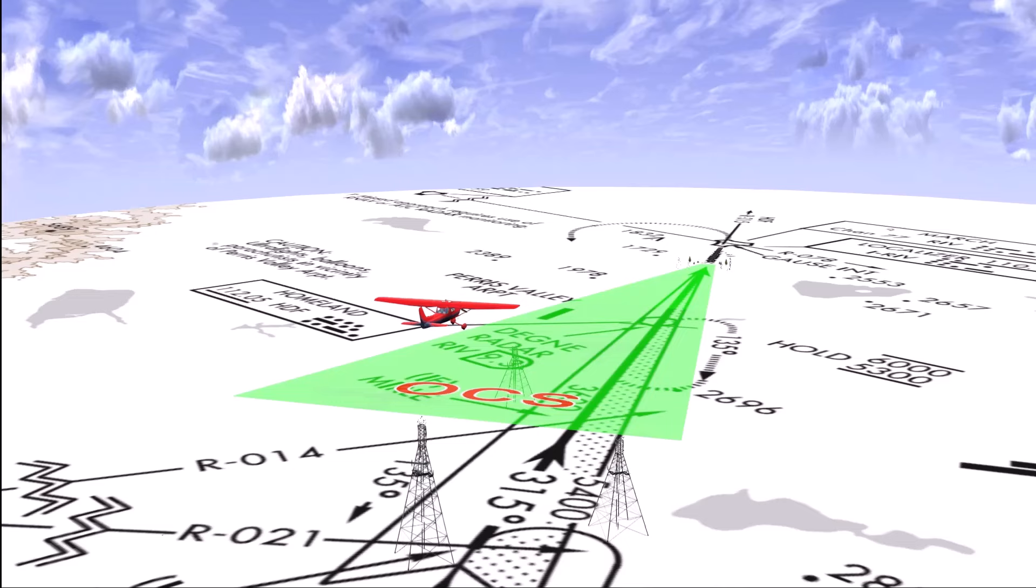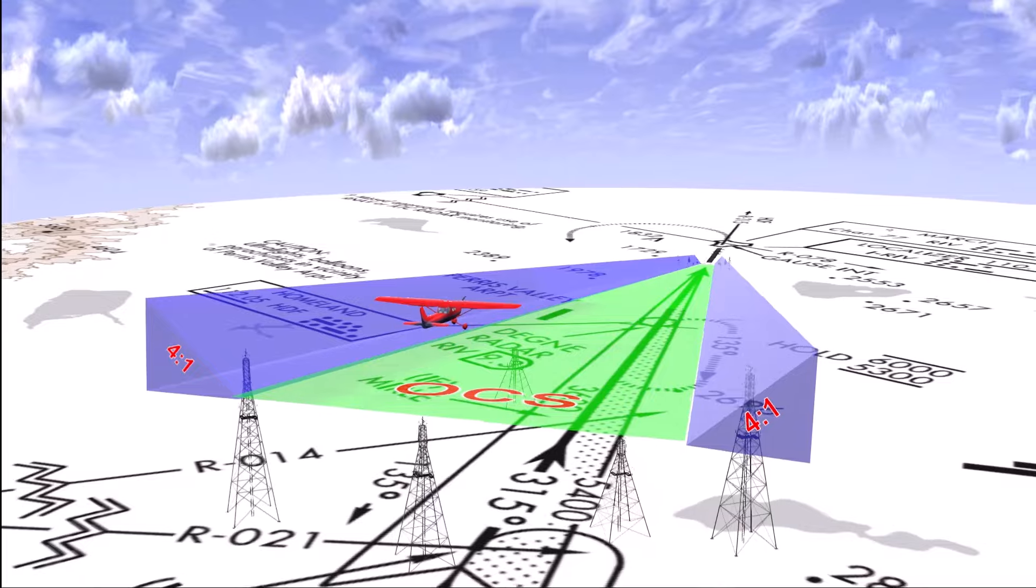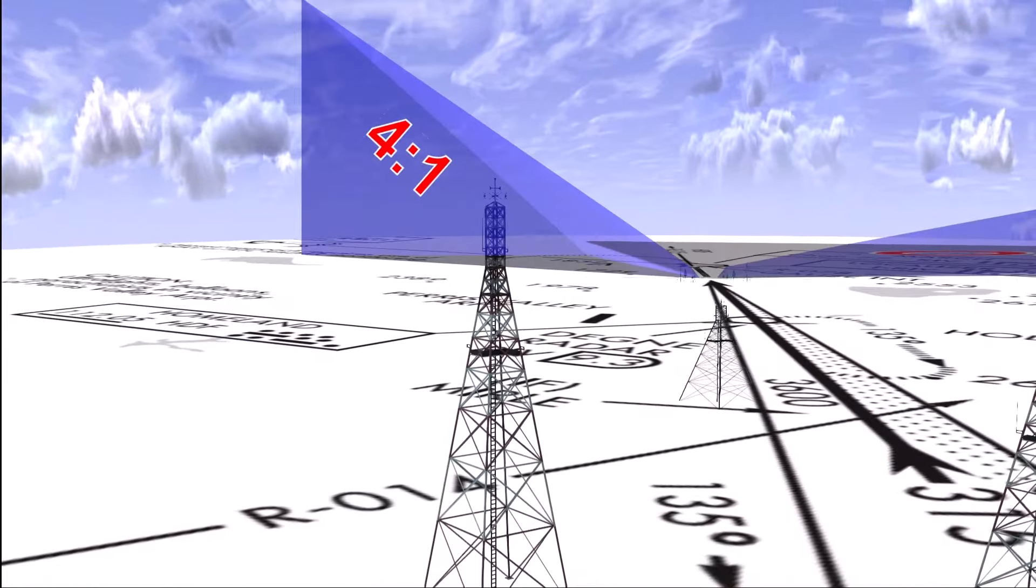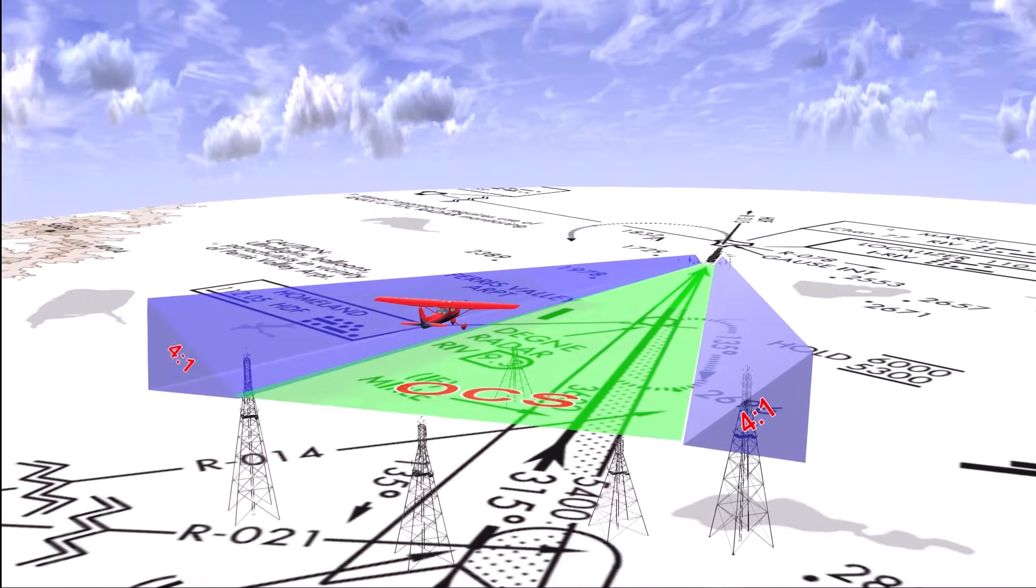To either side of the localizer course centerline is a triangular area with an inside face sloping outward and upward at a 4 to 1 ratio. Obstacles may penetrate into the blue triangular area but not above its inside face.